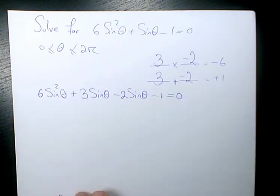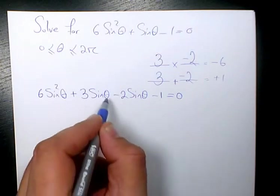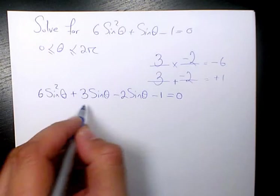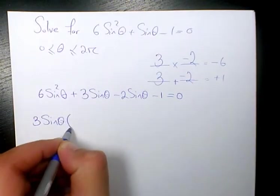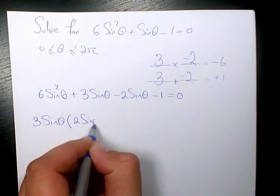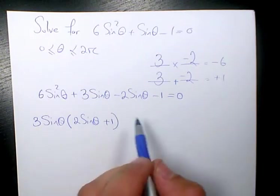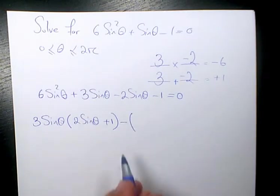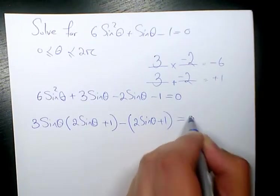So it's going to be 3 sine theta minus 2 sine theta minus 1 equals 0. Then I factor by grouping. Here, 6 sine squared theta plus 3 sine theta, I need to factor the GCF which is 3 sine theta. 6 sine squared theta divided by 3 sine theta is 2 sine theta. And here the GCF is negative 1, which will give 2 sine theta plus 1 equals 0.